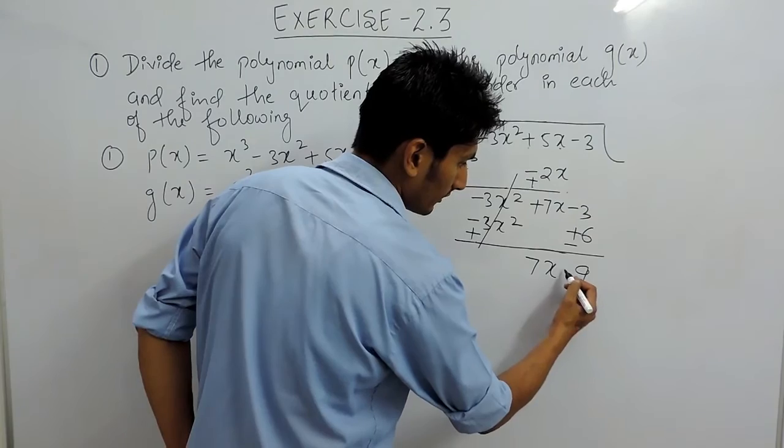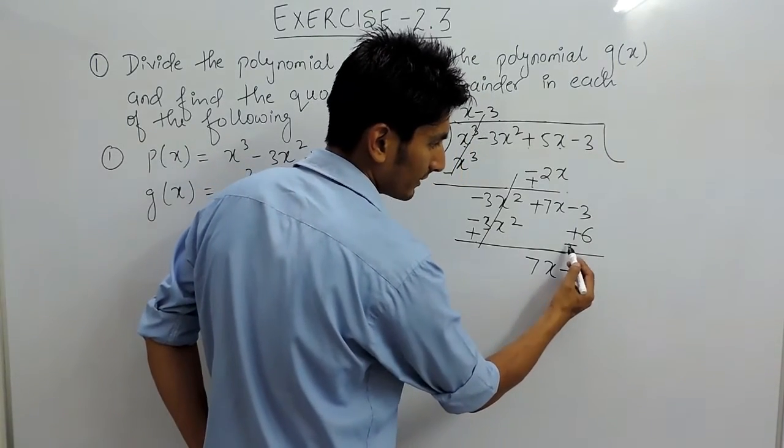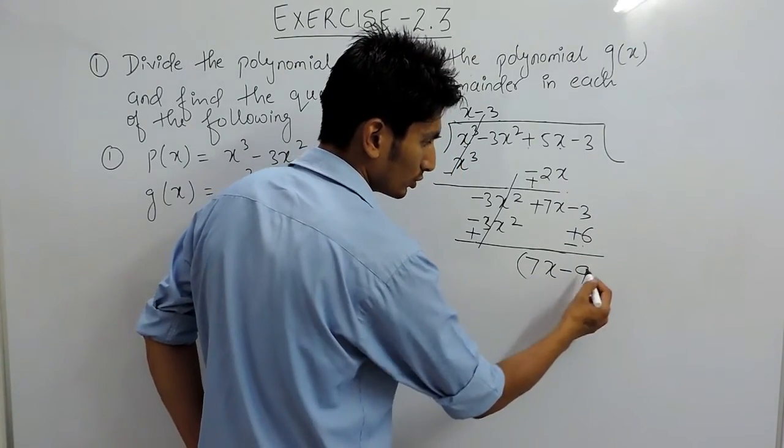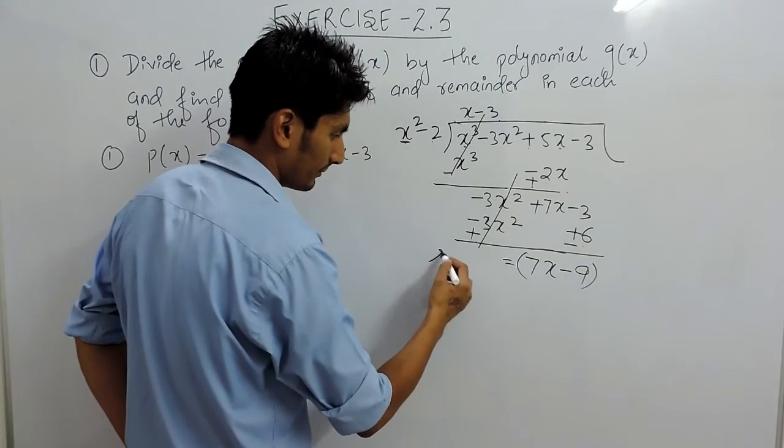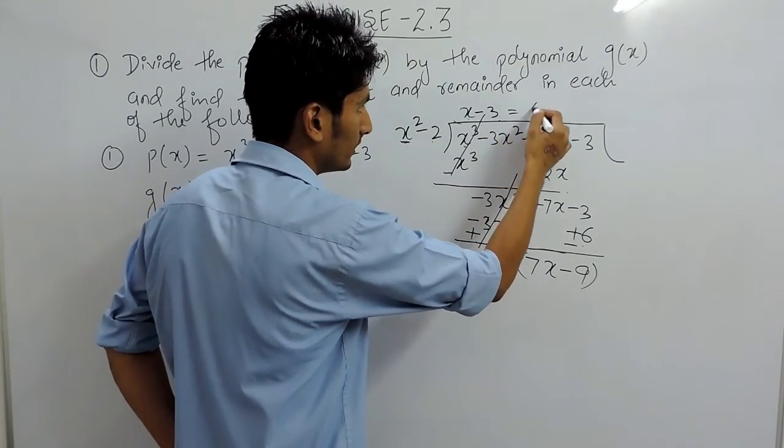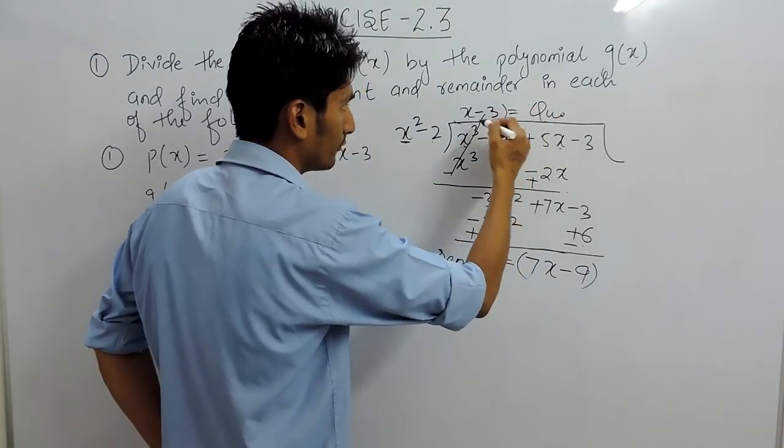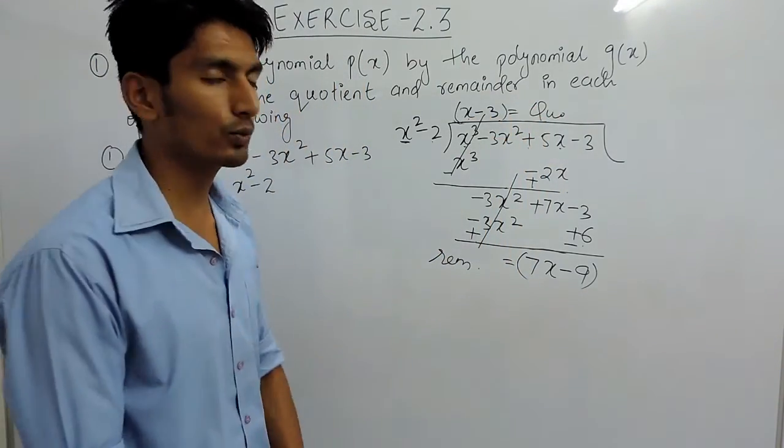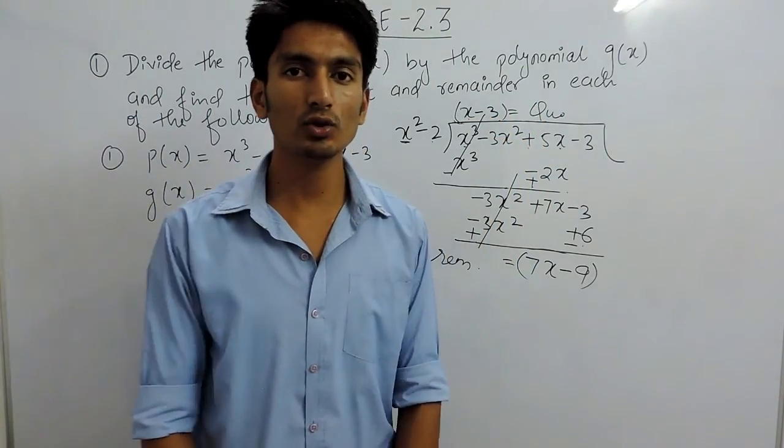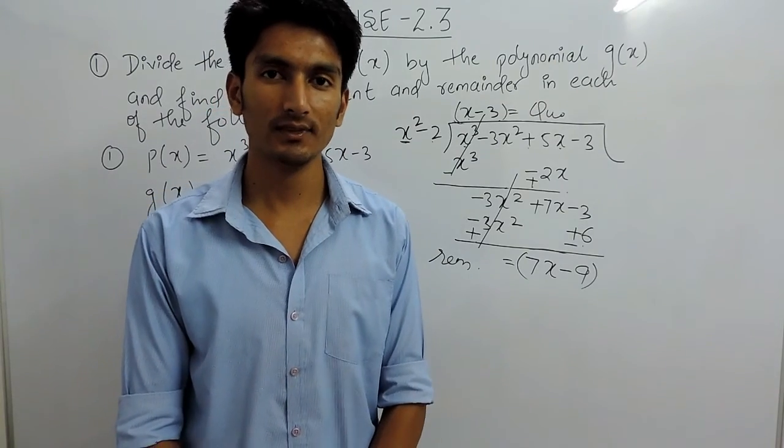Plus 7x is copied as is. Minus minus 6 is plus, so 6 plus 3 is 9 with negative sign because the greater number has negative sign. So minus 9 should be the remainder and x minus 3 should be the quotient for this particular question. This is how you can solve these kinds of questions. Thank you.